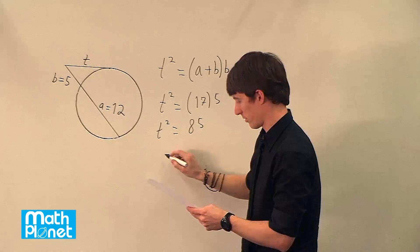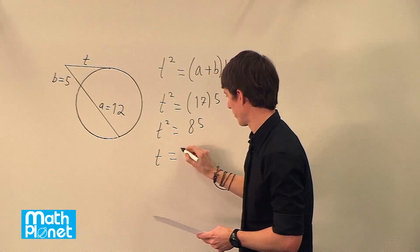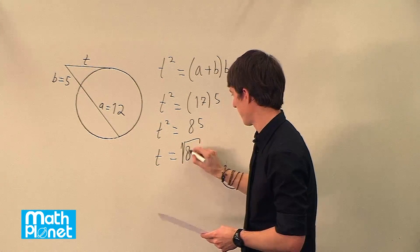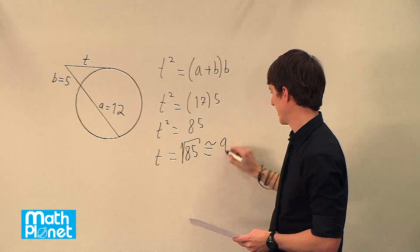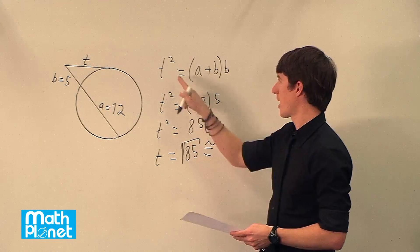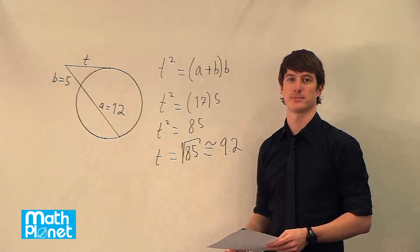And we can take the square root of that. So t equals the square root of 85 which is approximately equal to 9.2. And that just comes from this formula here.